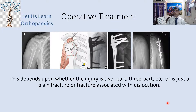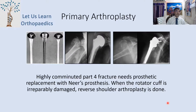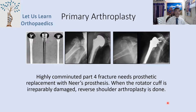Management depends on whether the injury is a two-part or three-part fracture, or a plain fracture versus a fracture with dislocation. Sometimes primary arthroplasty is indicated. Highly comminuted four-part fractures are managed with prosthetic replacement using the Neer prosthesis. A post-op radiograph shows the replacement using a Neer prosthesis.